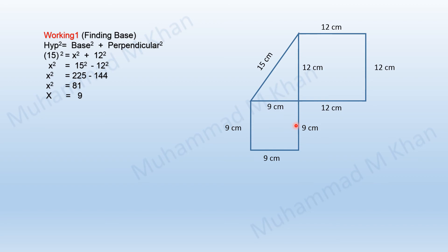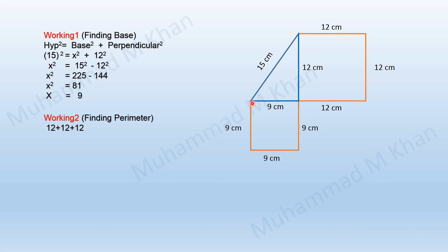Now we can calculate the perimeter, which is the total of all boundary sides. Going around the shape: 12 cm appears three times and 9 cm appears three times, plus the hypotenuse of 15 cm. Adding all: 3×12 + 3×9 + 15 = 36 + 27 + 15 = 78. The perimeter of the given shape is 78 centimeters.